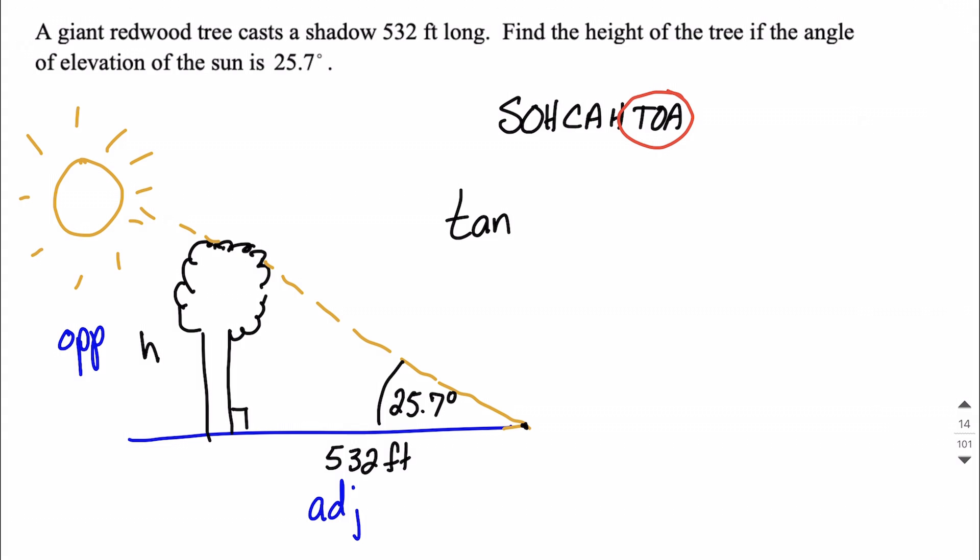So we can say tangent of the angle we care about, the 25.7 degrees, is going to be represented by the opposite, the h, over the adjacent side length. That was the 532 feet.